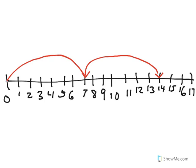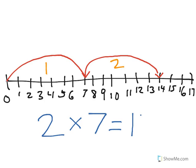Okay, this time remember we're going to count the groups. We have 1, 2 — so our first factor is 2. And we're going to count how many pieces are in each group: 1, 2, 3, 4, 5, 6, 7 — we stopped there. So 7 in the first group. 1, 2, 3, 4, 5, 6, 7 — 7 in the second group. So we're going to put a 7 as our second factor. We ended on the 14. So 2 times 7 is 14.